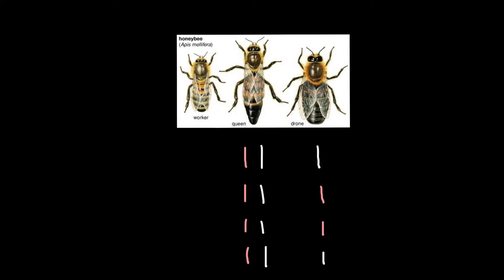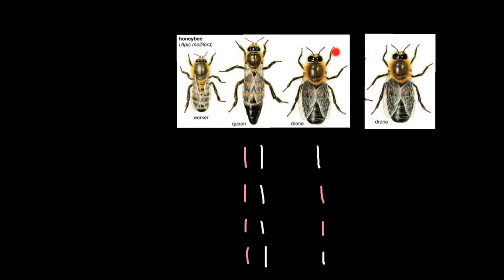For example, if we take another drone, this drone would be a brother of the first drone and would have the same mother. For chromosome number one, it may get just another chromosome from this set. For chromosome number two, it may get the same chromosome as his brother, but for the third chromosome it may get another one, and for the last chromosome it may get a different one than his brother has. So, as you see, the relatedness between two drones that developed from unfertilized eggs laid by the queen would be about 50% overall.